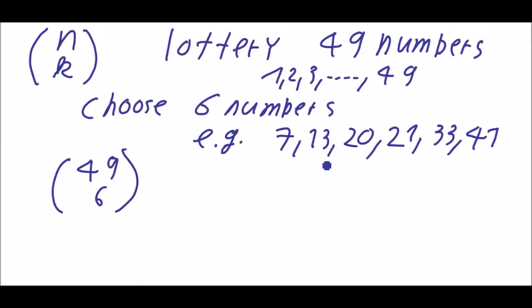Of course the chances are really tiny because 49 choose 6 is a really big number. So how do we calculate n choose k? It's n times n minus 1 times n minus 2 and so on.